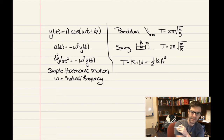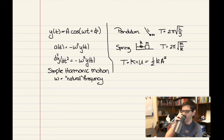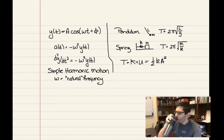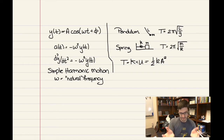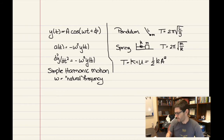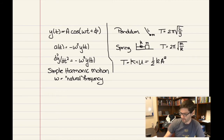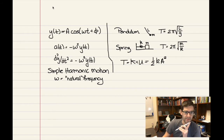For the pendulum, the angular frequency is the square root of g divided by L — again depending on the properties of the system. We sometimes call this the natural frequency, since it depends on the natural physical properties of the system. This becomes very important when dealing with things like resonance, which we'll look at a little bit later today as an optional component.